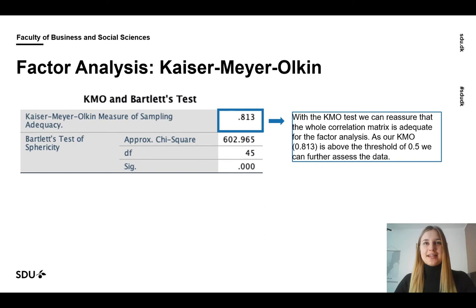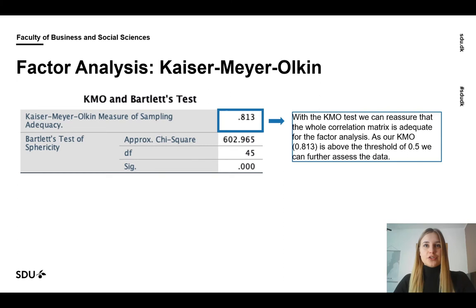What is the first thing to look at when scanning the SPSS output of the factor analysis? The answer is quite simple: start right at the top. There we can find the results of the Kaiser-Meyer-Olkin test. The KMO is a helpful tool that indicates whether the variables we use for the factor analysis are actually suitable for conducting a factor analysis. We simply have to check whether the parameter in the upper right corner is higher than 0.5. Our value of 0.8 is above the threshold, so we are good to move on.